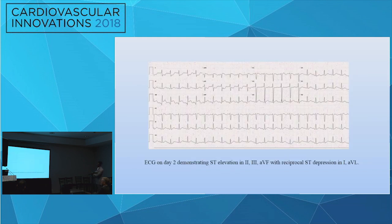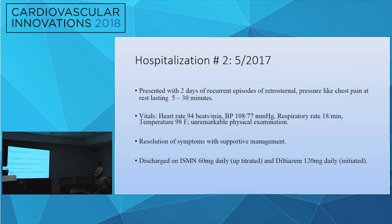She was managed conservatively and discharged on day five with isosorbide mononitrate 30 and amlodipine 2.5 milligrams. This is the EKG on the second day when she became hypertensive and bradycardic. She comes back again two months later in May 2017 with the same complaints, vitals stable. We managed the patient with supportive management without any angiogram, optimized medical therapy going up from 30 to 60, and also added diltiazem for spastic angina.